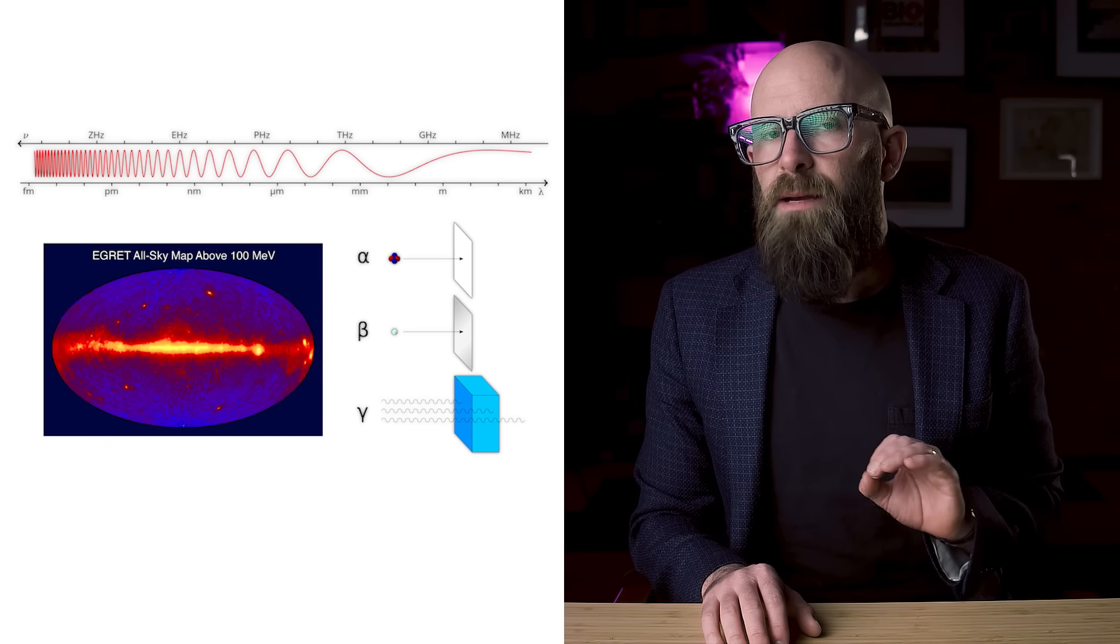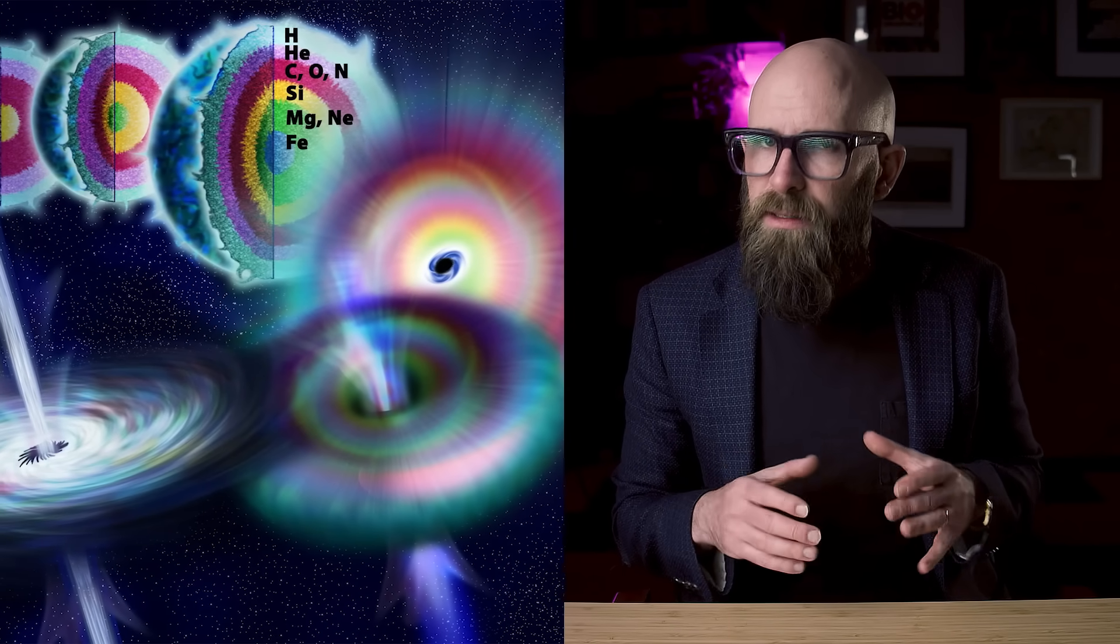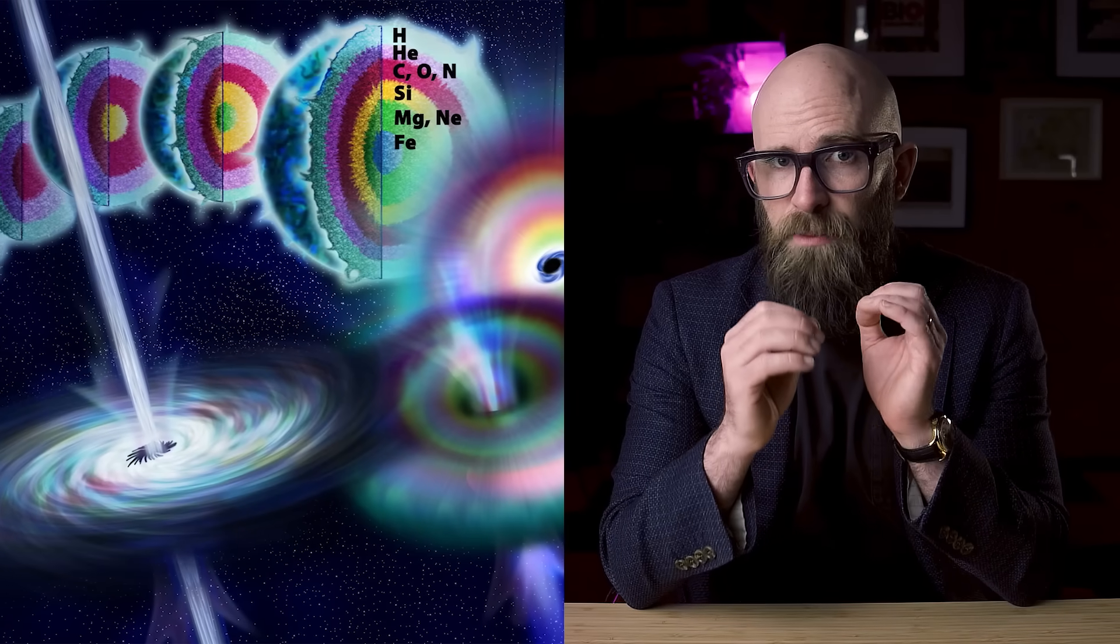Those particular signatures should be given off by primordial black holes as they start to deteriorate, specifically if there happens to be a plank star enclosed inside, but not if there isn't.